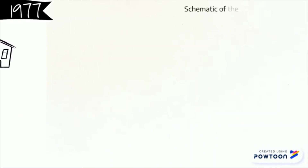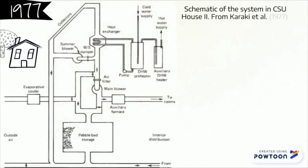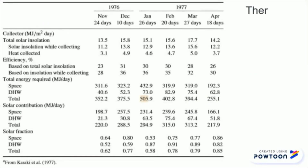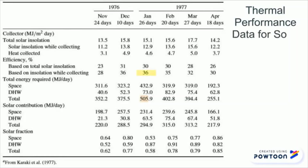CSU House 2, using an air system with conventional air heating collectors and an early pebble bed energy store. It has reached an efficiency of 36% with a total of 505 MJ per day.